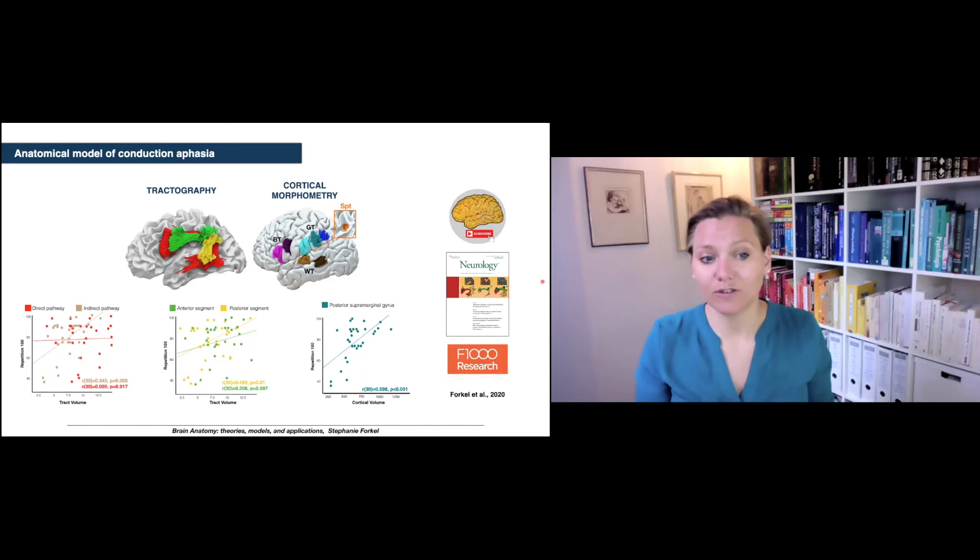Classically for the last 150 years it was hypothesized that the arcuate fasciculus is responsible or damage to the arcuate fasciculus is responsible for conduction aphasia, because it's disconnecting the superior temporal lobe or Wernicke's area and the frontal lobe or Broca's area. So both areas are still intact, that's where you can understand and where you can articulate, but the communication between those two areas via the arcuate fasciculus was hypothesized to be damaged and therefore the transfer didn't work when you wanted to repeat what you had heard.